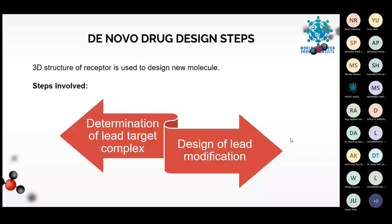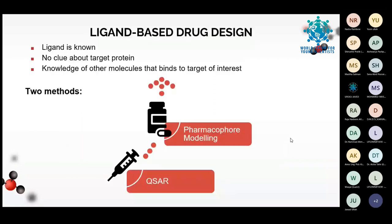In ligand-based drug design, the ligand is already known but there is no clue about the target protein. If the ligand interacts with many proteins, we have to select our target at this step. If you know that a particular ligand or chemical is used for the treatment of a specific disease, the ligand is already known — we need to determine where it interacts in the body. Two important methods are pharmacophore modeling and QSAR analysis — quantitative structure-activity relationship.